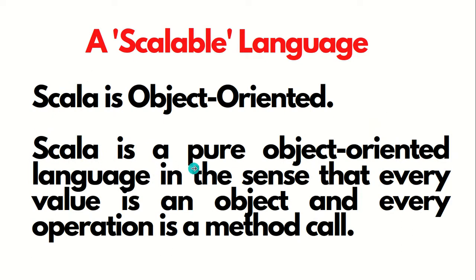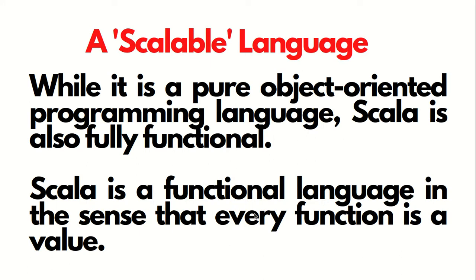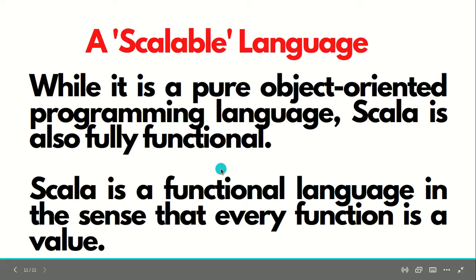Scala is a pure object-oriented language in the sense that every value is an object and every operation is a method call. Scala is also fully functional — it is a functional language in the sense that every function is a value.